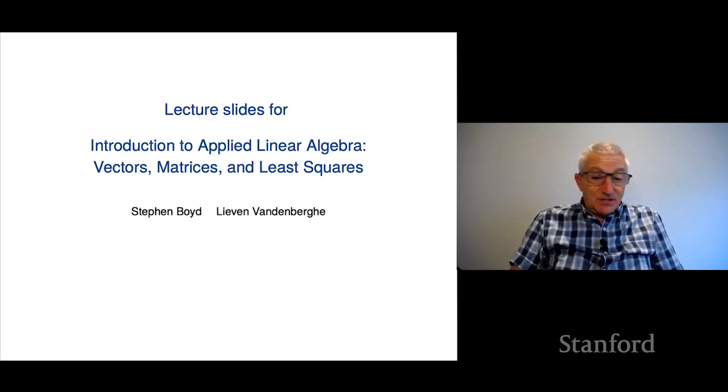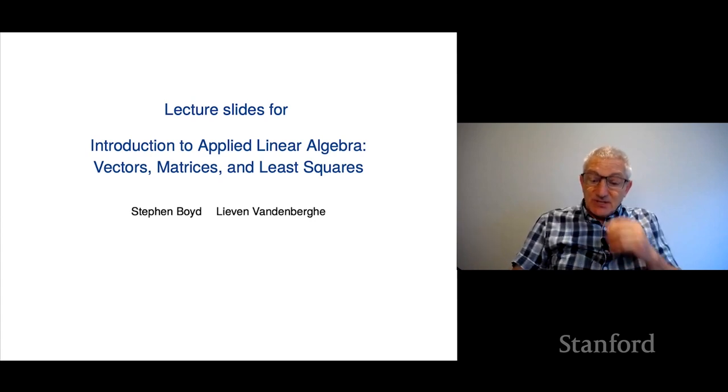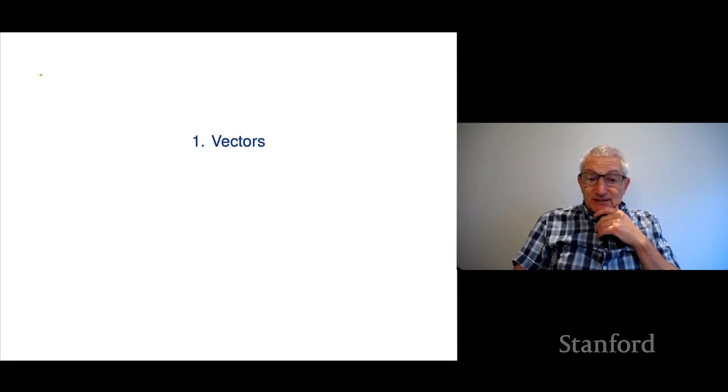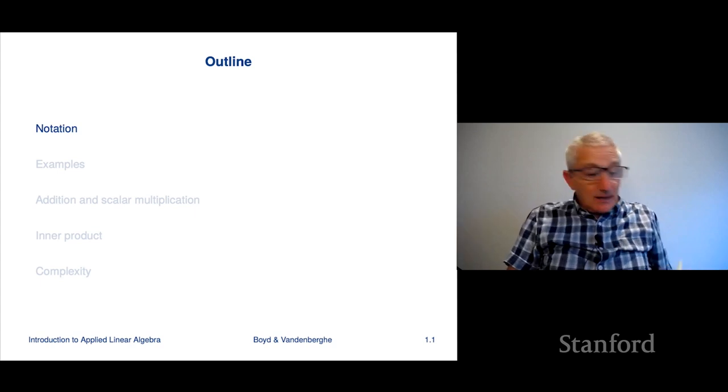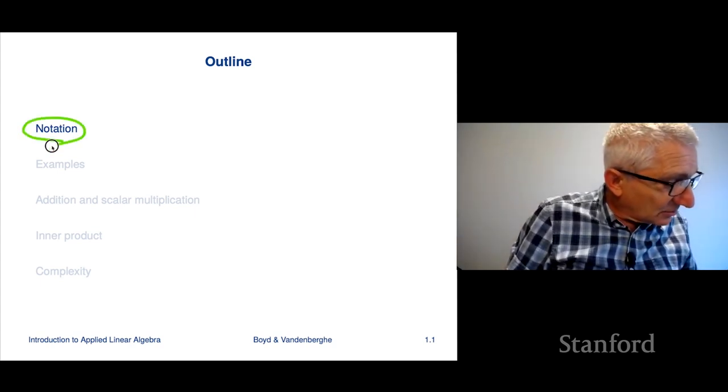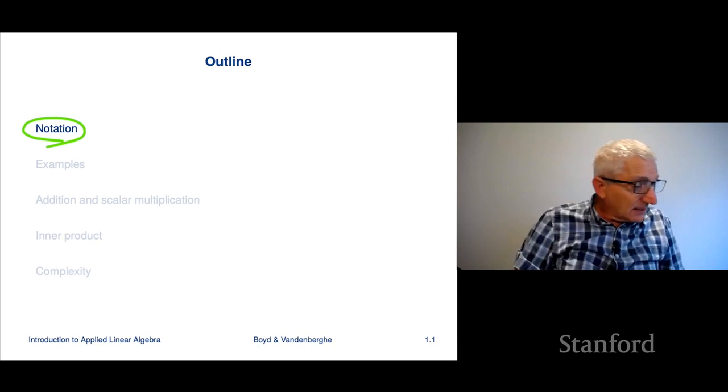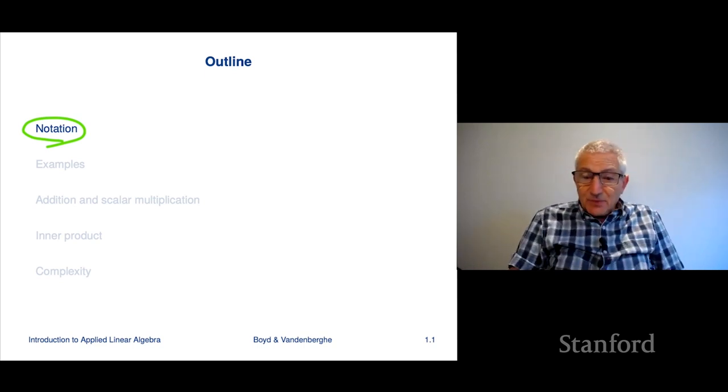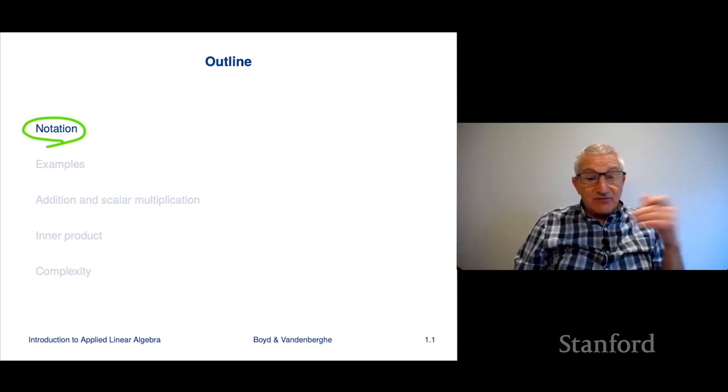We're gonna start. This is the very first lecture associated with the book Introduction to Applied Linear Algebra, Vectors, Matrices, and Least Squares. We're gonna jump right in now at the very beginning, which is vectors. So we'll start by talking about notation, then we'll go on and say a little bit about examples, and we'll talk about the first set of operations on vectors. But first, we're just gonna talk about vectors themselves.